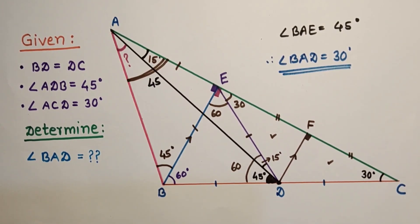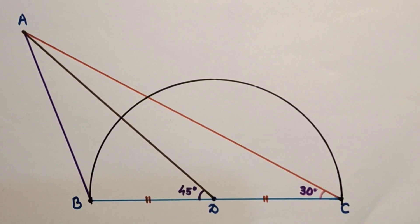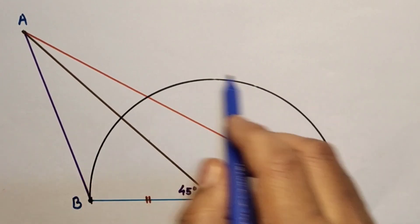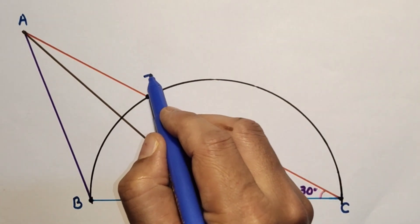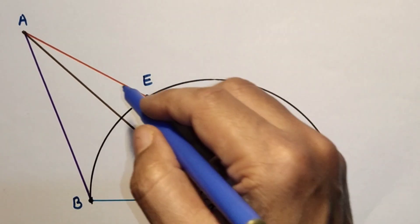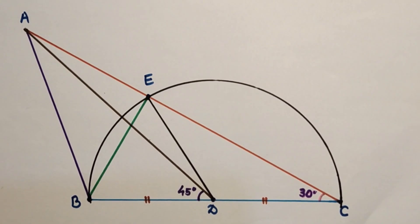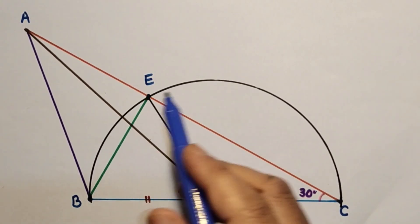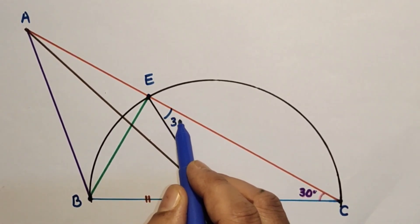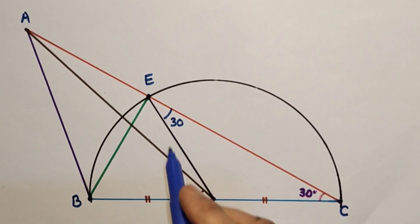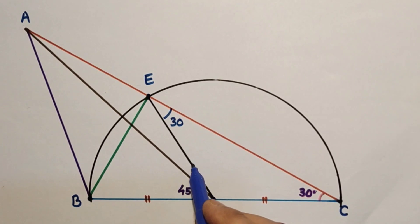Alternatively, for Method 2, take D as the center of a circle with radius DB and draw a semicircle. This semicircle intersects side AC at a point E. Join BE and ED. Since DC and DE are both radii, DC equals DE. Angle DCE is 30 degrees, so the exterior angle BDC equals 60 degrees.